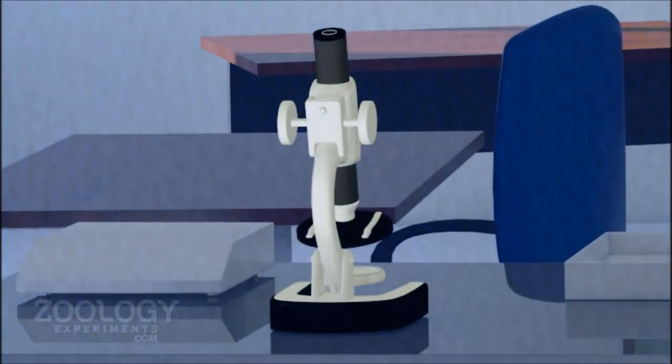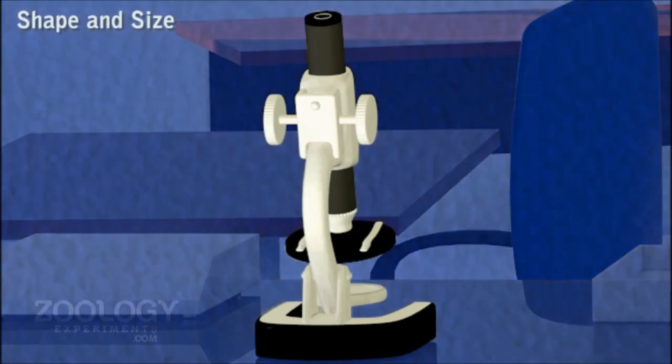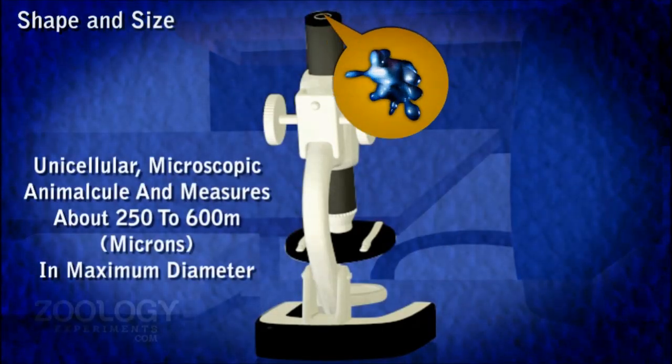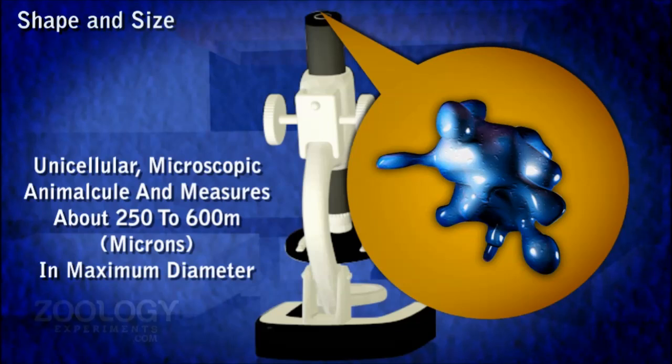Shape and size. Amoeba Proteus is a unicellular microscopic animal and measures about 250 to 600 microns in maximum diameter.